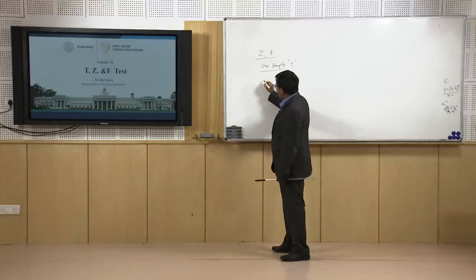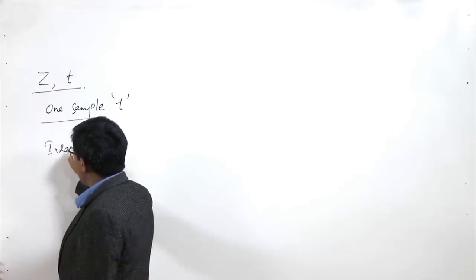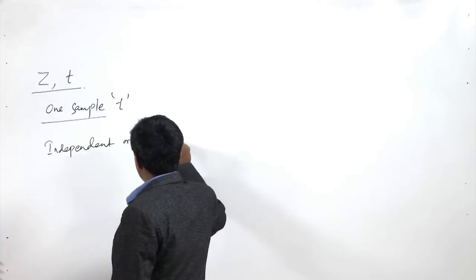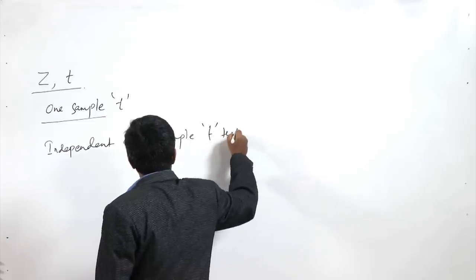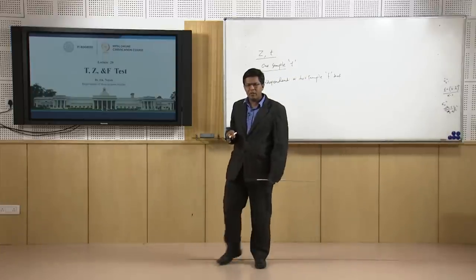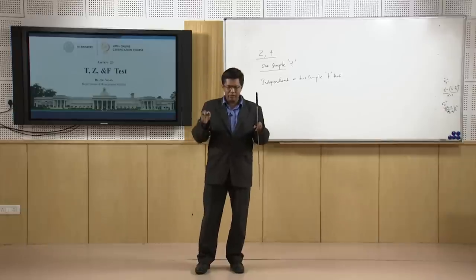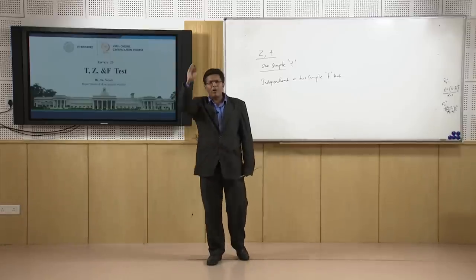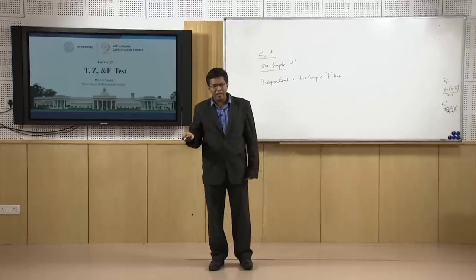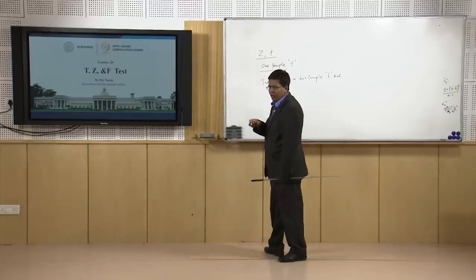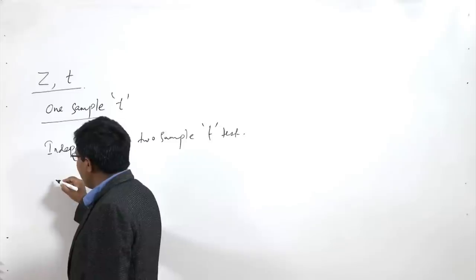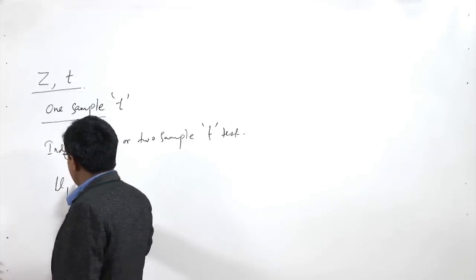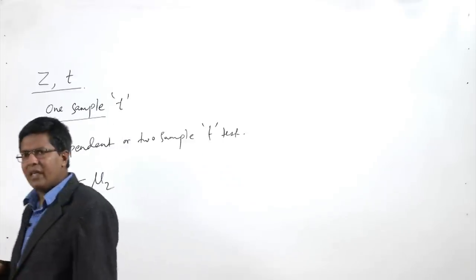On the other hand, there is the independent or two-sample T-test. In an independent sample T-test, there are two groups of samples. We are trying to determine whether these two samples are coming from the same population or are they different from each other. The null hypothesis in such situations is that the population groups from which these two samples come are actually the same.